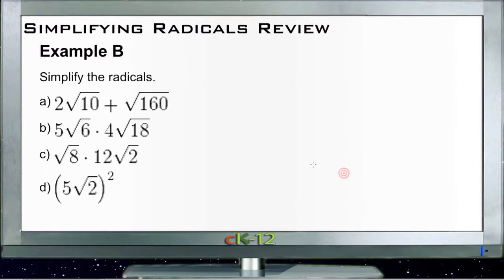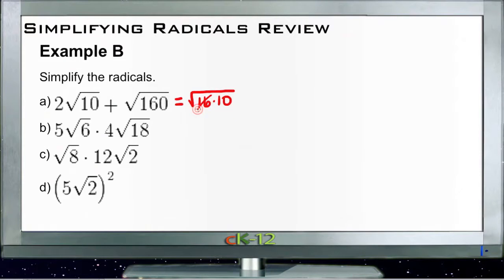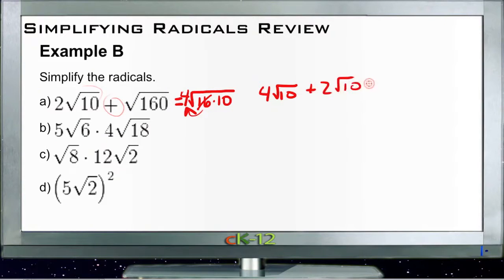And then Example B — simplify the radicals. First we need to add: 2 roots of 10 plus the root of 160. The root of 160 is not even, so what we're going to do is break it up into the square root of 16 times 10. The square root of 16 is 4, so it goes outside as a 4. That gives us 4 roots of 10, which we're adding to 2 roots of 10, which gives us 6 roots of 10.